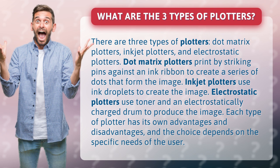Dot matrix plotters print by striking pins against an ink ribbon to create a series of dots that form the image. Inkjet plotters use ink droplets to create the image.